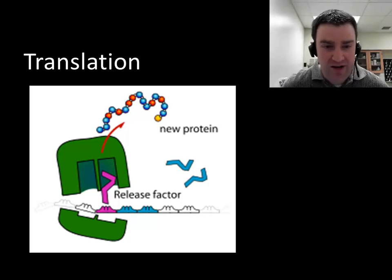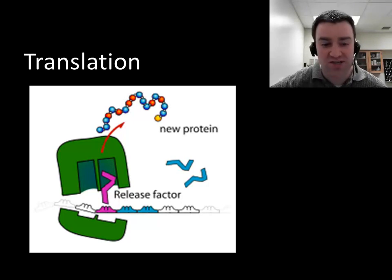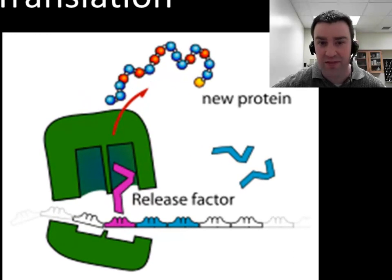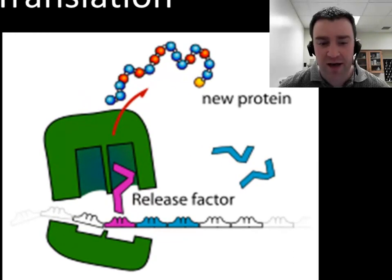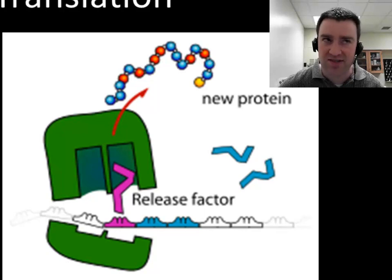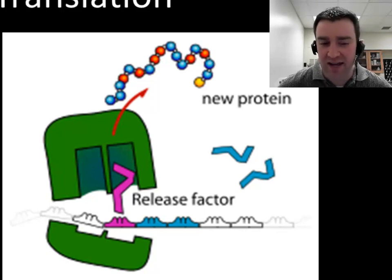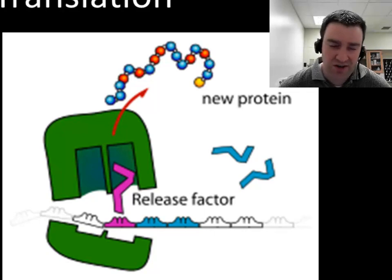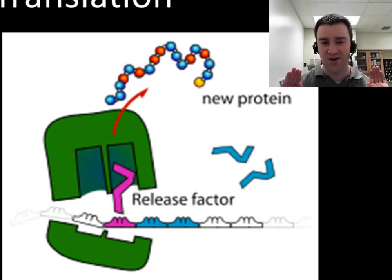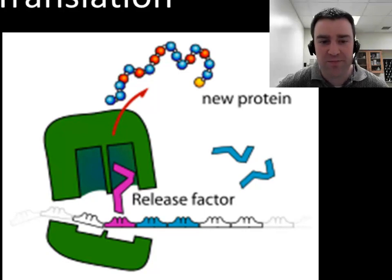Translation comes to an end when the ribosome reaches the stop codon in the protein-coding part of the messenger RNA. A tRNA still comes to that stop codon with its anticodon, but instead of carrying an amino acid, that tRNA just carries something called a release factor, and that's what causes the protein to be released from the ribosome.